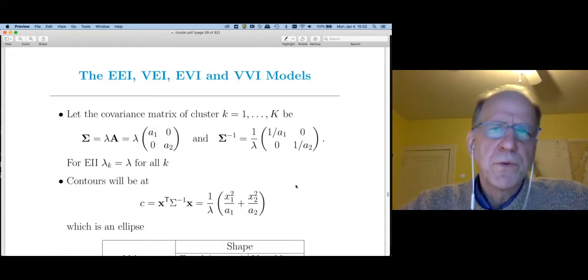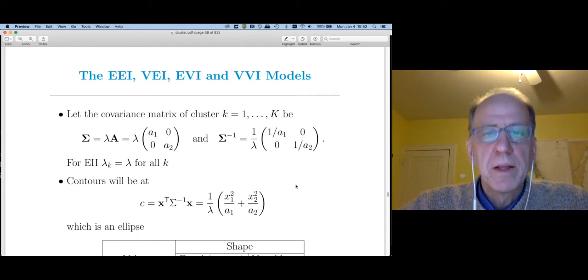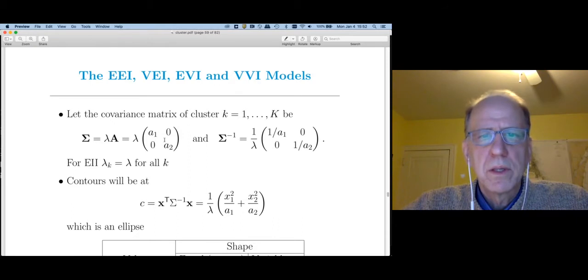VII is exactly like we had with spherical, where all the clusters are round, but they have different variances. So this cluster is very compact, whereas this other cluster has a comparatively large variance. So EII and VII assume spherical clusters.